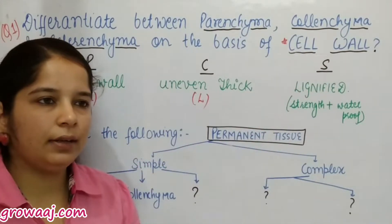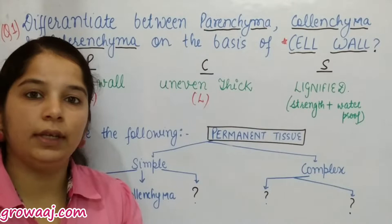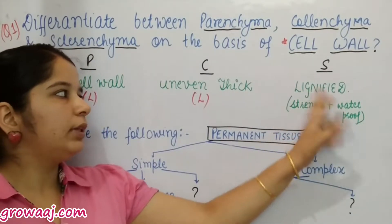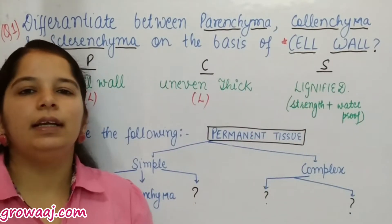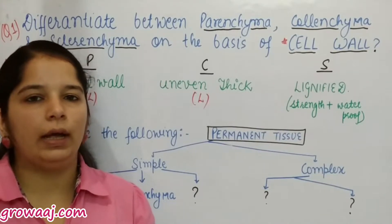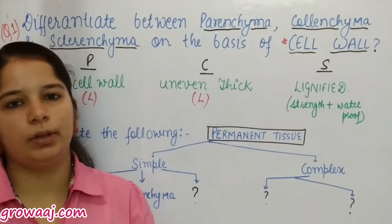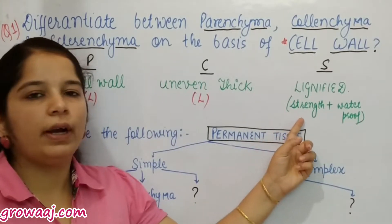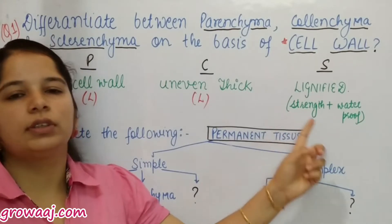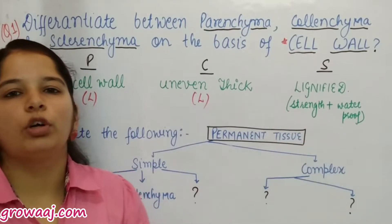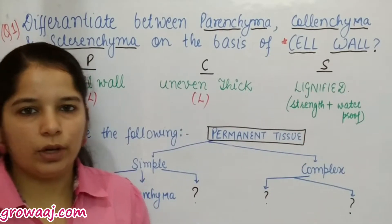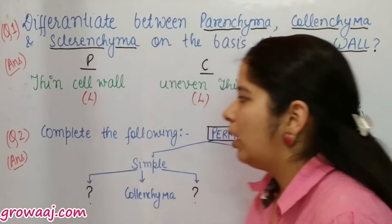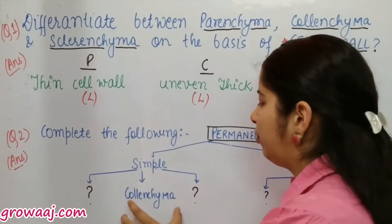In sclerenchyma, the cell wall is totally thick, and this thick cell wall is made of a compound called lignin. Lignin provides strength and makes the cell wall waterproof. So this was the difference between the three tissues on the basis of cell wall.